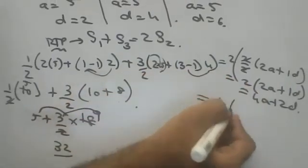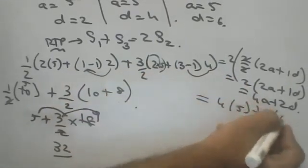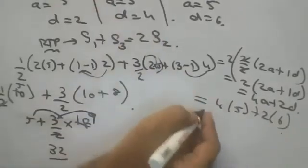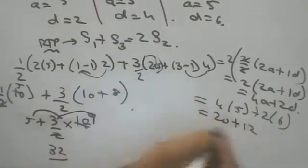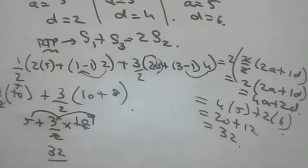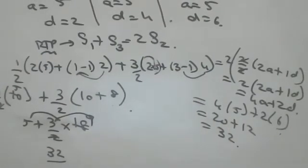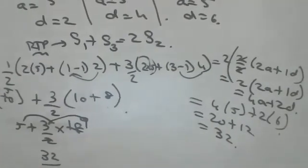4 into 5 plus 2 into 6, they have given all. 20 plus 12 is 32. LHS is equal to RHS. Like this you should do. LHS is equal to RHS if you prove, it is enough.